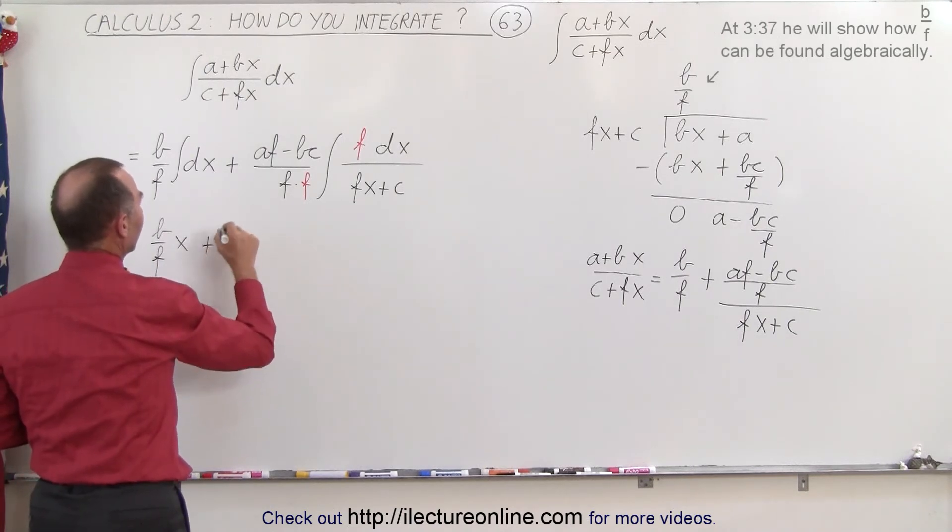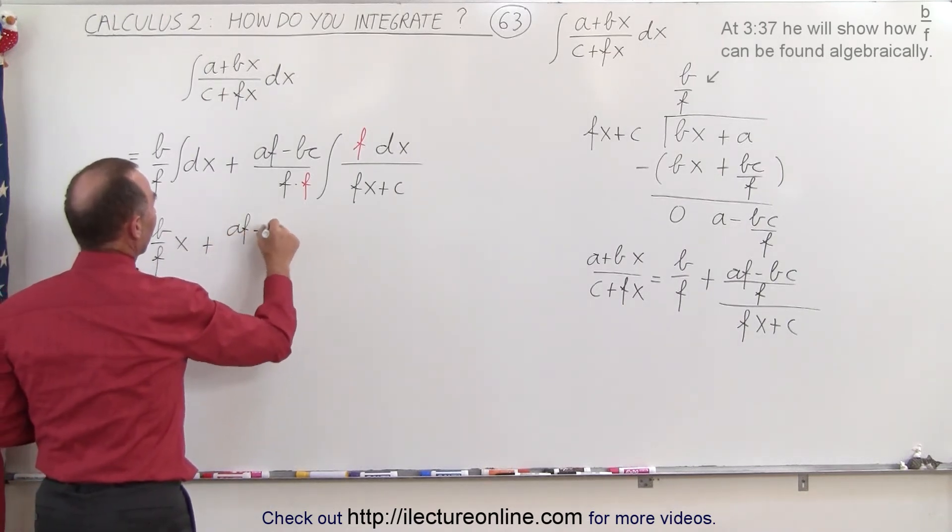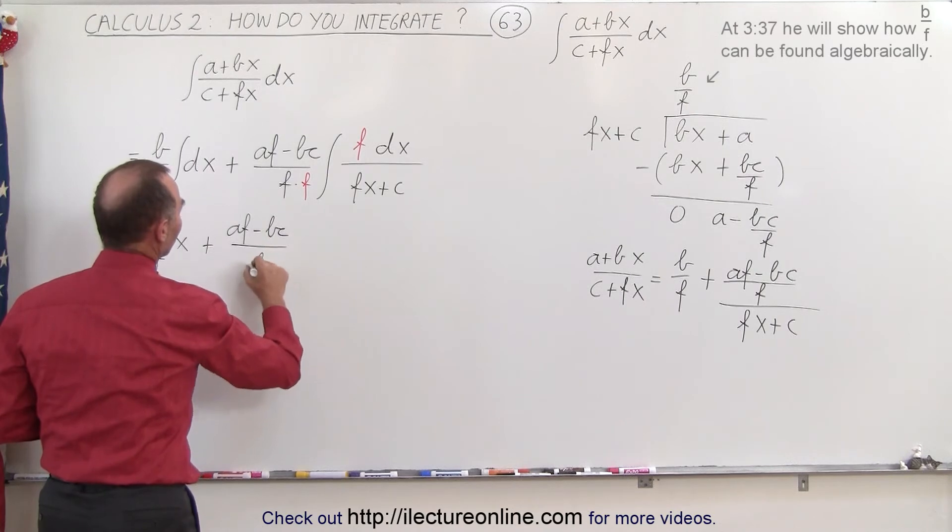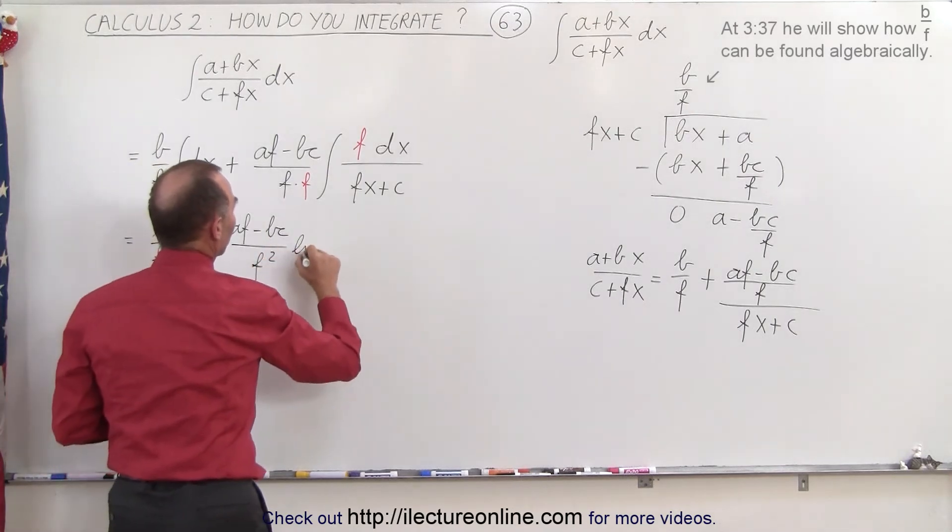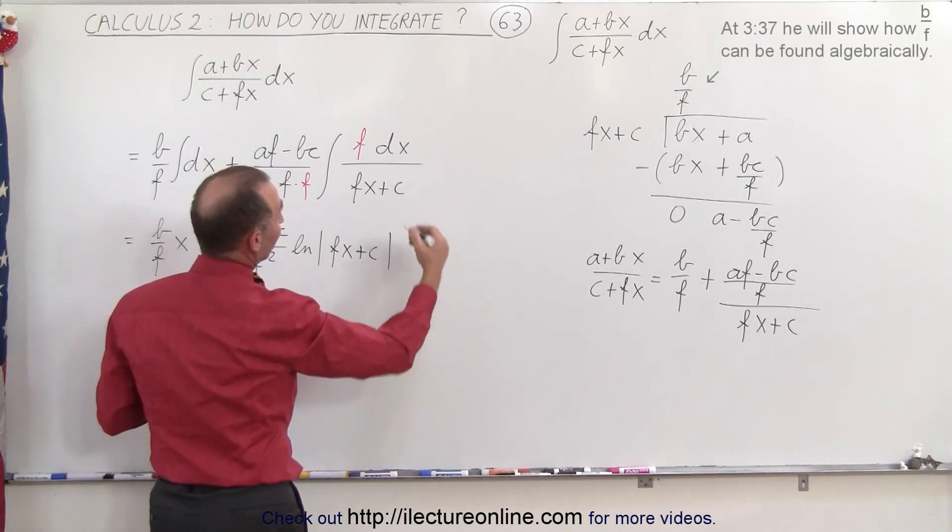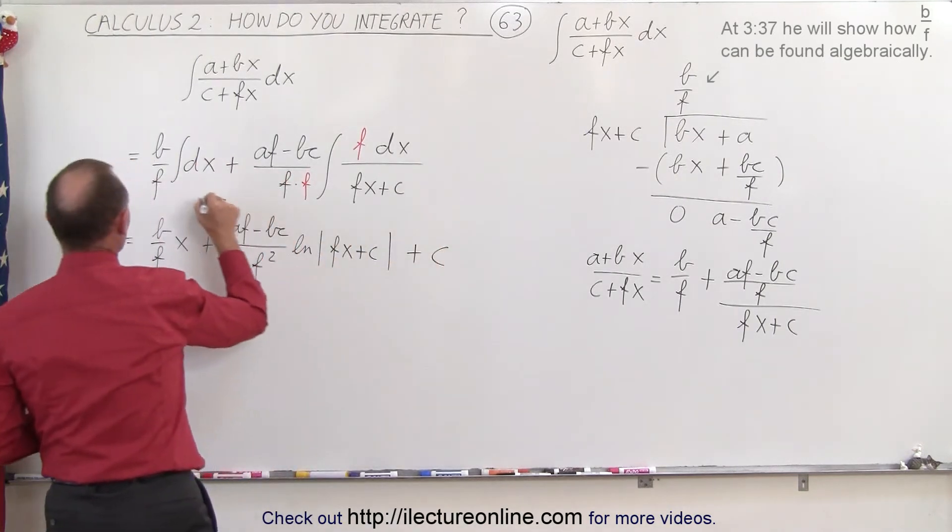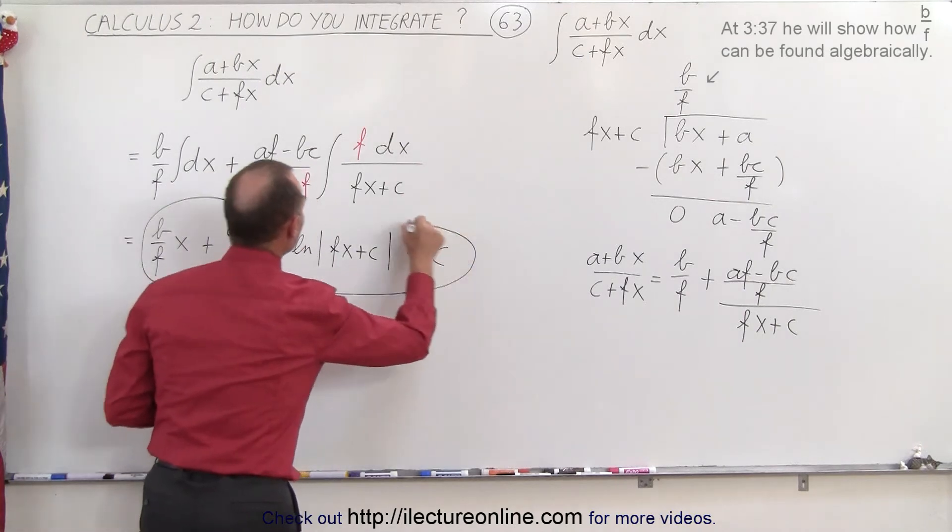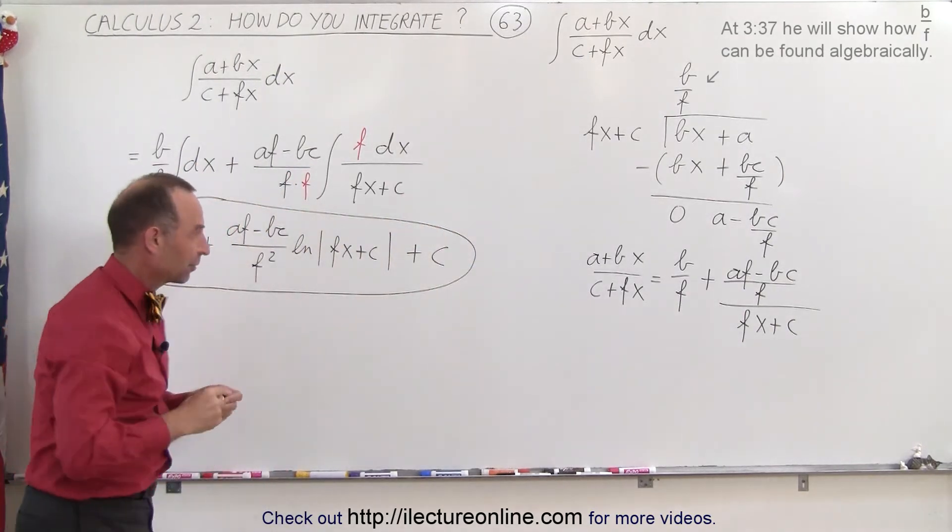So this becomes equal to b over f times x, and here we have plus af minus bc over f squared times the natural log of fx plus c, or c plus fx, however you want to write it, plus a constant of integration, and so that's how we integrate that particular example.